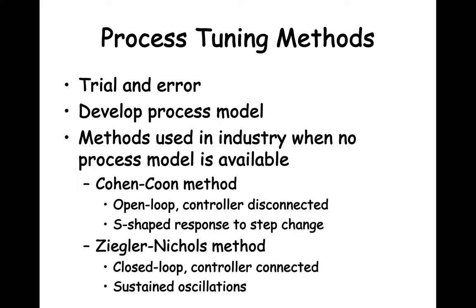One method is trial and error — it's always an option. Another approach is to develop a process model like those we have used in this class, then use various modeling techniques to find good values for Kp, tau i, and tau d. In industry, there are many processes for which no one has developed a process model. The process physically exists and people need a way to set new controllers or adjust old controllers so that the process has good control. We will talk about two methods: the Cohen-Kuhl method and the Ziegler-Nichols method.